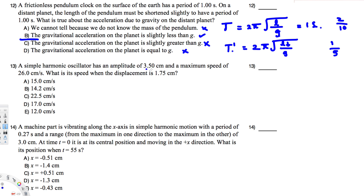The second question: a simple harmonic oscillator has an amplitude of 3.5 centimeters and a maximum speed of 26 centimeters per second. What is its speed when the displacement is 1.75 centimeters? The speed at any displacement in simple harmonic motion is given by v = ω√(A² - x²), where x is displacement, A is amplitude, and ω is angular frequency.